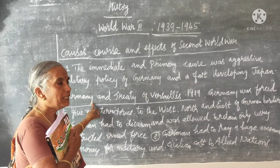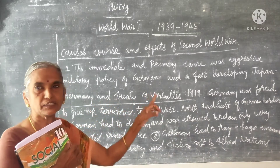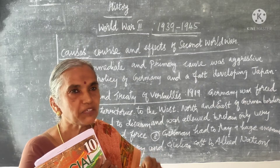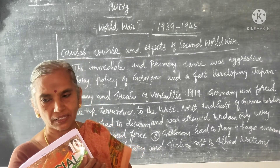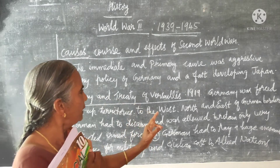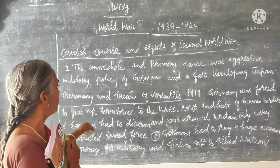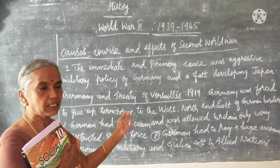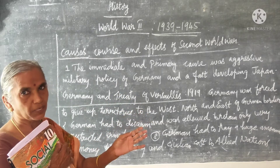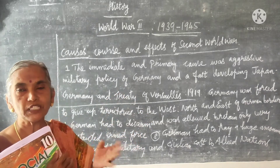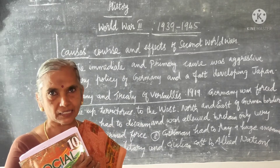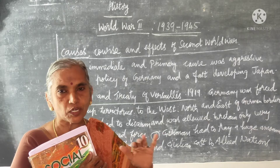Now let us see the German treaty verses. The central powers, including Germany, were defeated by the Allied powers. Germany was forced to give up territories to the west, north, and east of the German border, and Germany was expected to pay a huge amount of money as war reparations. Its size was also reduced.